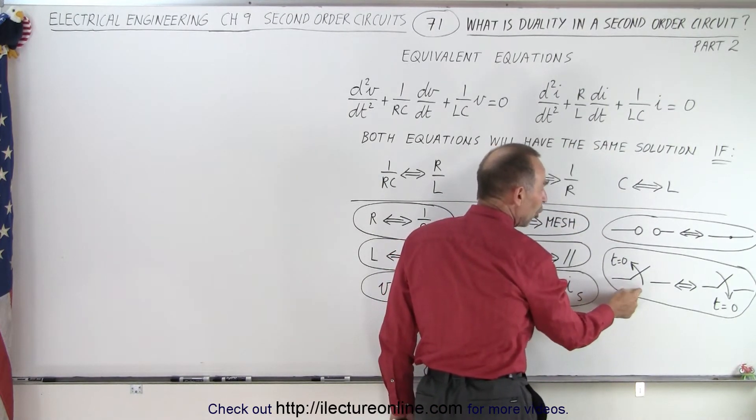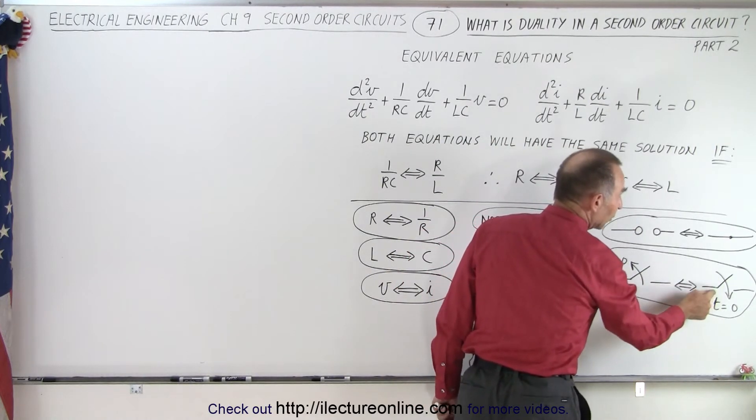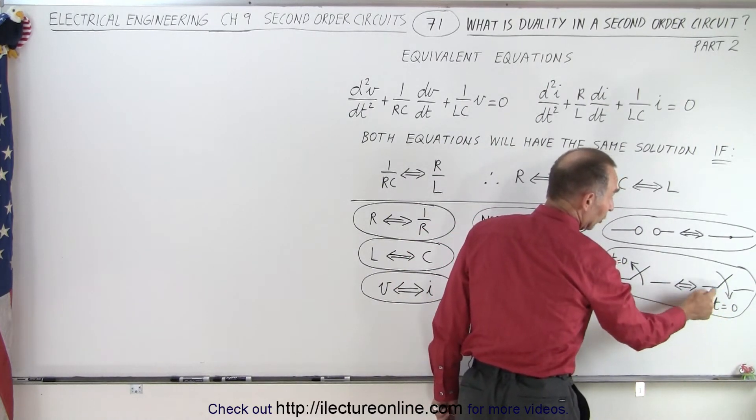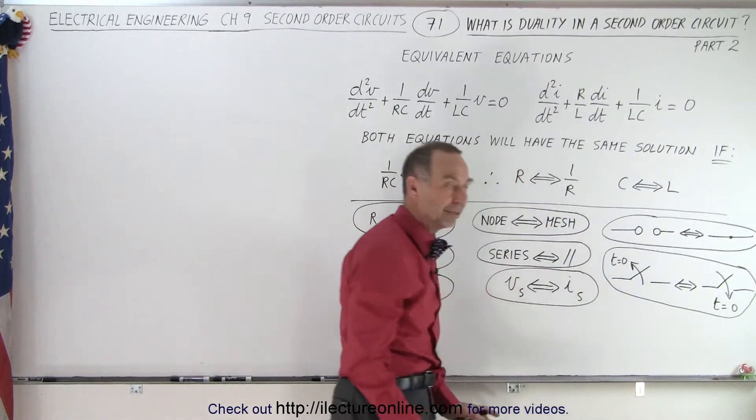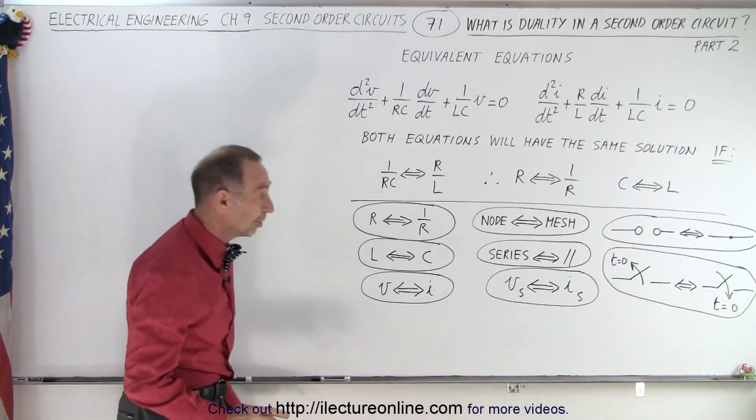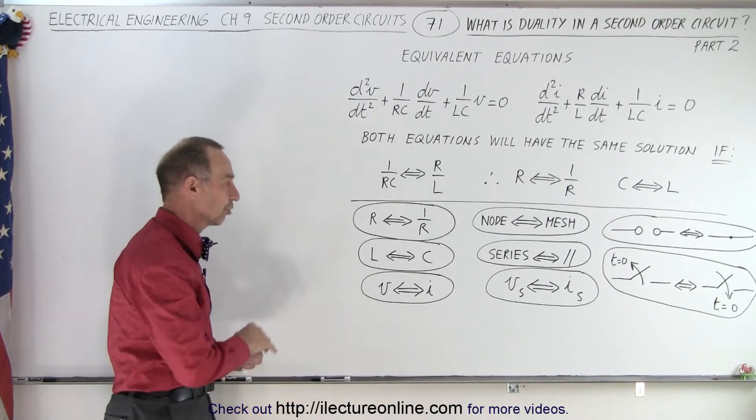And if we have a switch that opens at time equals zero, that becomes a switch that closes at time equals zero. Or if you have a switch that closes at time equals zero, that becomes a switch that opens at time equals zero. If you make all those changes, you will have the exact duality circuit from the initial circuit you started with.